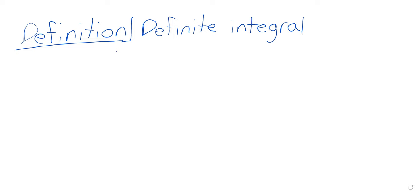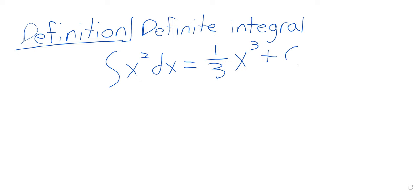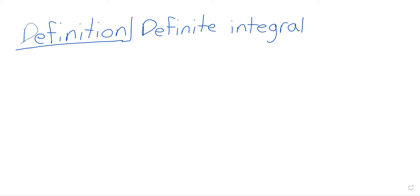The indefinite integral of x squared is one third x cubed plus c. Now we have the definite integral. When you first see the definite integral, it's not going to be at all obvious that the definite and indefinite integrals are related — they're going to look like these completely unrelated concepts — but we'll tie them together in the very next section.